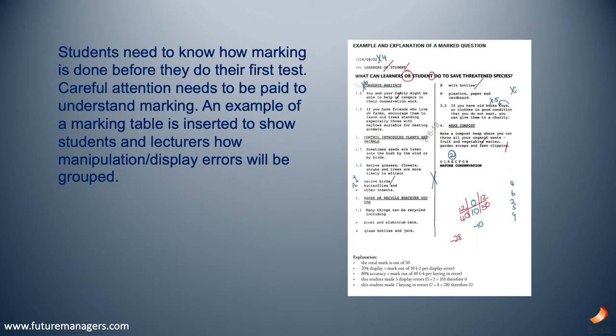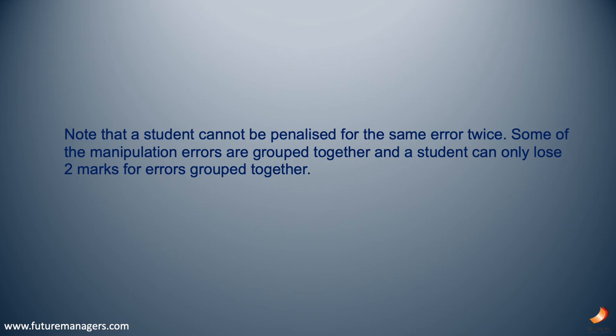An addendum which explains how marks are allocated is also included, making it clearer for students to see how marks are awarded or deducted. Students need to know how marking is done before they do their first test. An example of a marking table is inserted to show students and lecturers how manipulation or display errors will be grouped. Note that a student cannot be penalized for the same error twice, and some manipulation errors are grouped together so a student can only lose two marks for errors grouped together.